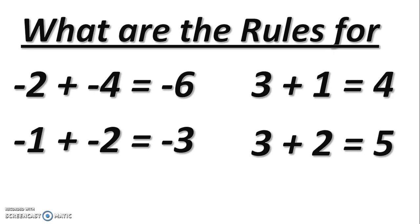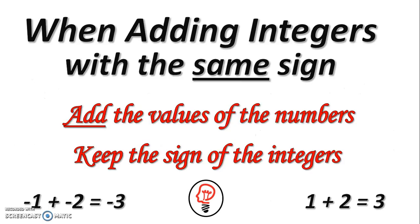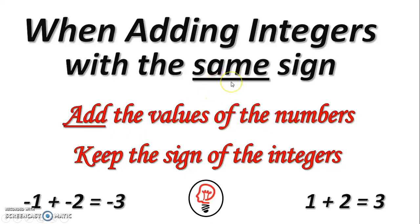Now we need to think about the problems we just did and discover the rules for adding integers with the same sign. The rule is: when you add integers with the same sign — like negative one plus negative two equals negative three, or positive one plus positive two equals positive three — you add the values of the numbers. The value of negative one is one and the value of negative two is two; combined, they give three. The answer will have the same sign as both numbers in the problem.